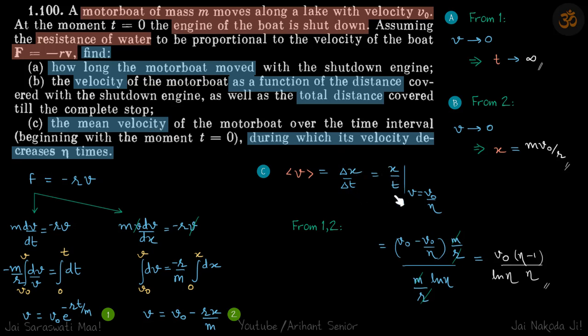So x by t. We need to find that during which the velocity decreases eta times. So we need to find x by t at v is equal to v0 by eta. So x we have already found as a function of v, so we'll just put the value of x as a function of v and put the value of v0 by eta here, and the time it takes.